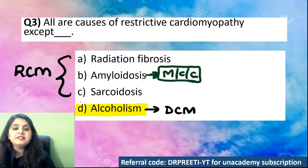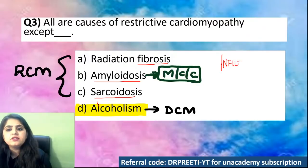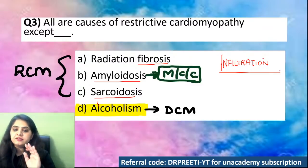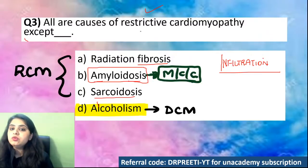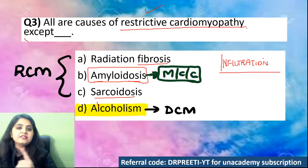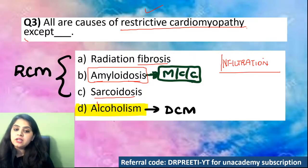Alcohol causes DCM — it's one of the very common causes of dilated cardiomyopathy. Whereas all the others — fibrosis, sarcoidosis, amyloidosis, or any kind of infiltrative disorder, even hemochromatosis — can cause restrictive. Most common is dilated for hemochromatosis, but amyloid is going to be the most common cause of restrictive cardiomyopathy. Tomorrow's first question will be cardiac amyloidosis.